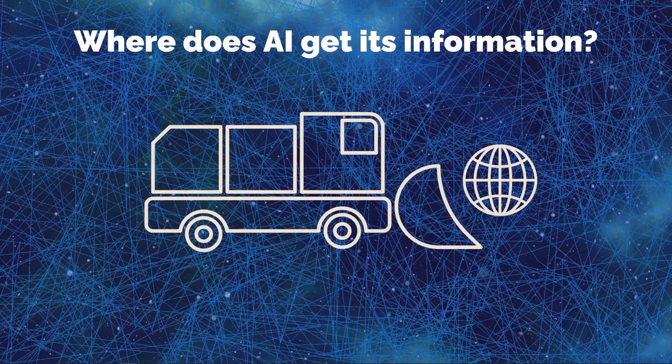We've all spent a lot of time out on the internet, so we have an idea of what's out there — things like Google search engines, Wikipedia, social media, maybe your local pizza place or vet's office. All of that stuff online that we're used to looking at every day is where ChatGPT, co-pilot, and all these generative AIs get their information from, directly from the internet.